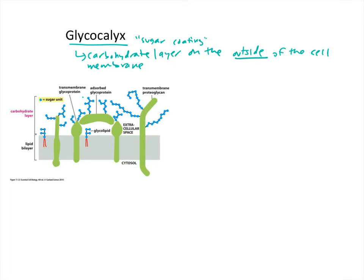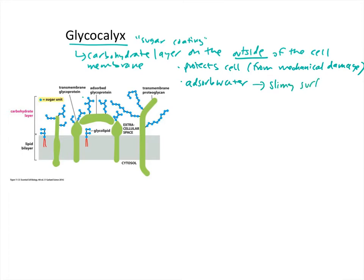The purpose of the glycocalyx is to protect the cell, for example from mechanical damage. It also can adsorb water, which produces a slimy surface. This is particularly helpful for mobile cells, such as white blood cells.